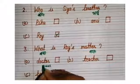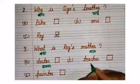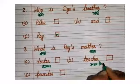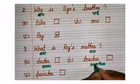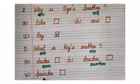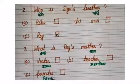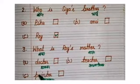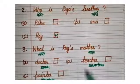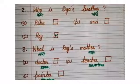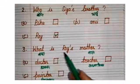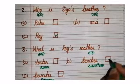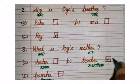Doctor. Teacher means? Adhyapak. Option C, painter. Chitrakar. Jo painting karta hai. Okay. Then think about it. Option A is right, option B is right, or option C is right? What is Roy's mother? Roy ki mother kya hai? Roy ki mother teacher hai. Teacher is correct option.